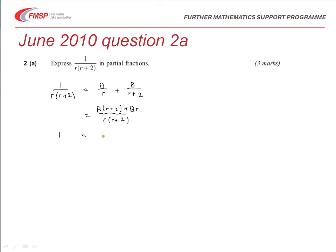And compare the numerator, that must be the same. So we know that A times (r+2) plus Br must be equal to 1.